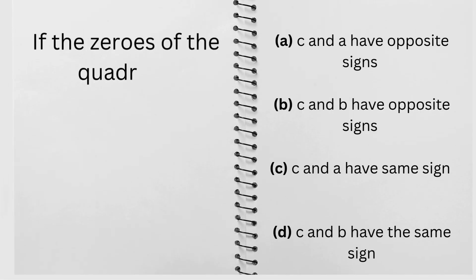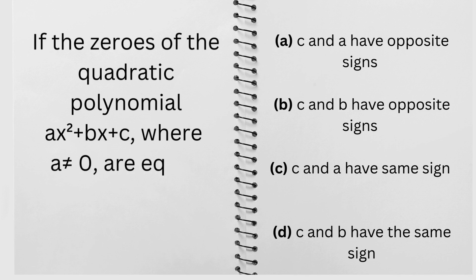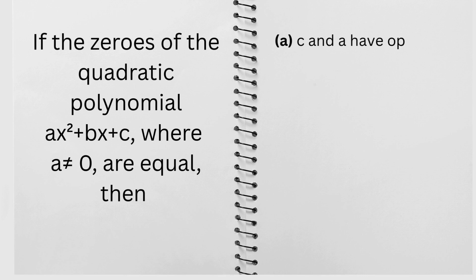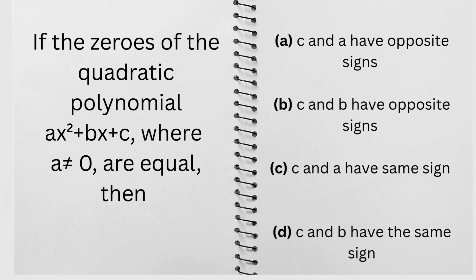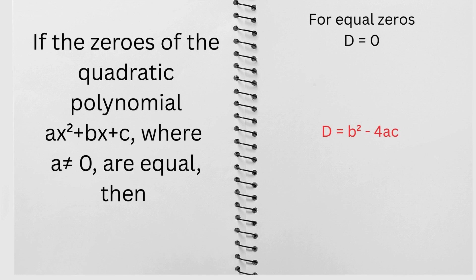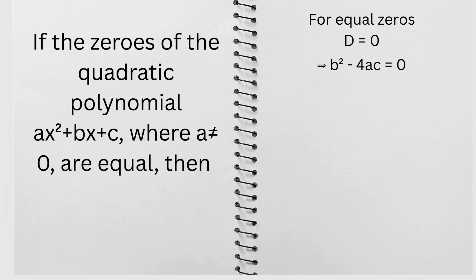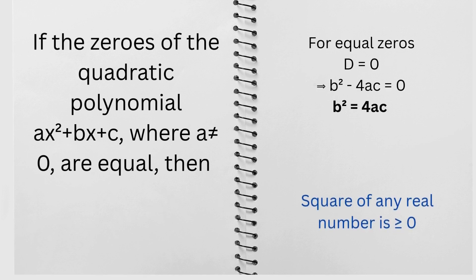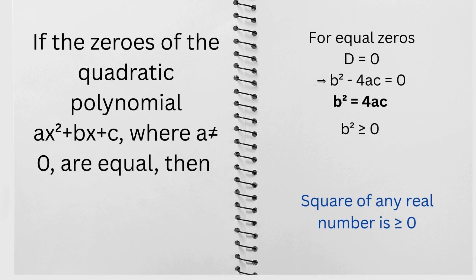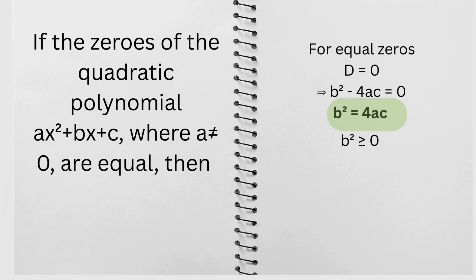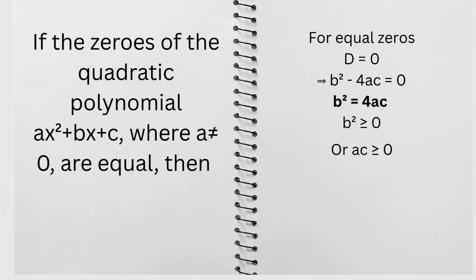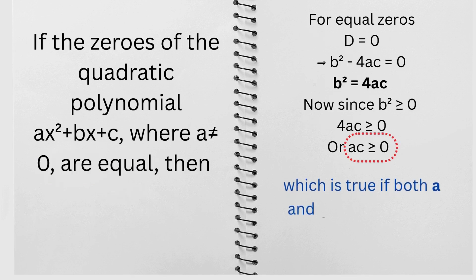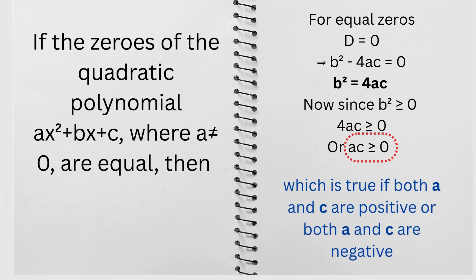If the zeros of the quadratic polynomial ax² + bx + c (where a ≠ 0) are equal, then: for equal zeros, D = 0, meaning b² - 4ac = 0, so b² = 4ac. Since a square is always greater than or equal to zero, b² ≥ 0, which means 4ac ≥ 0, so ac ≥ 0. Since a ≠ 0, ac ≥ 0 holds when both a and c are positive or both are negative, meaning c and a have the same sign.